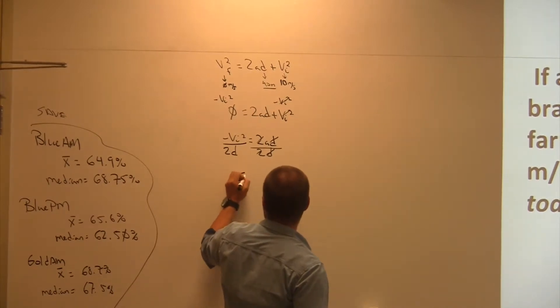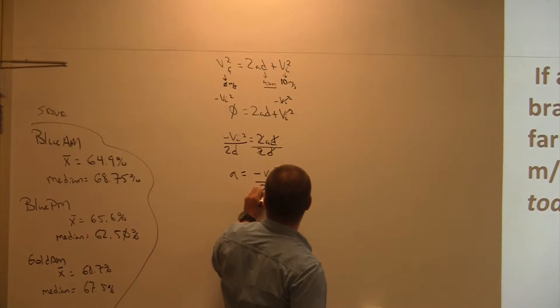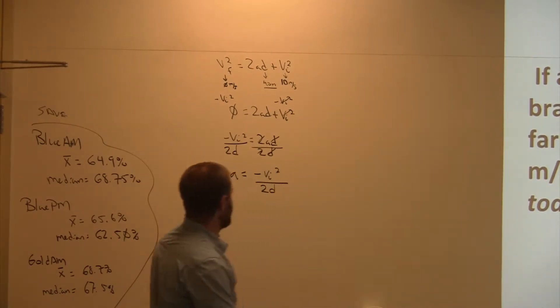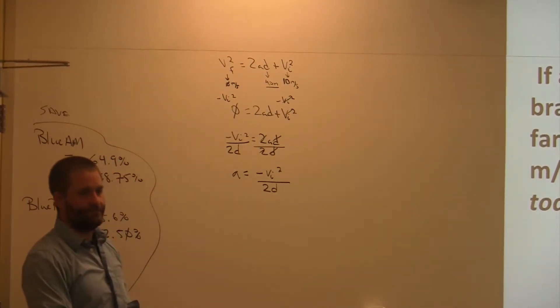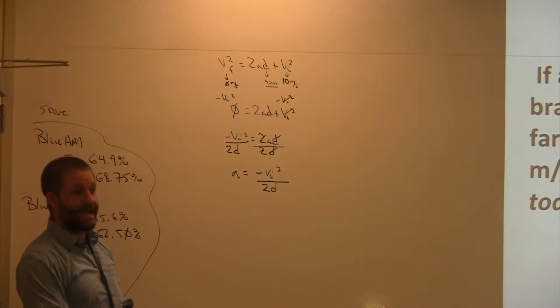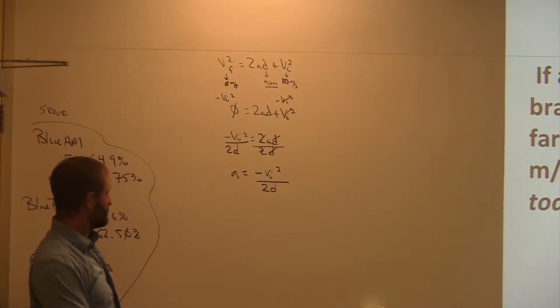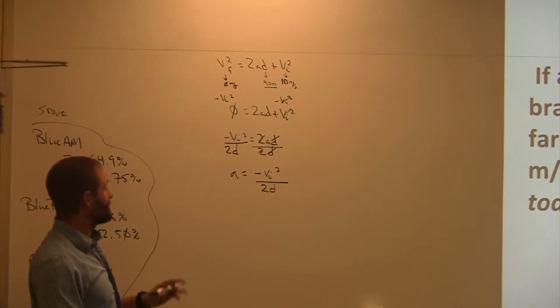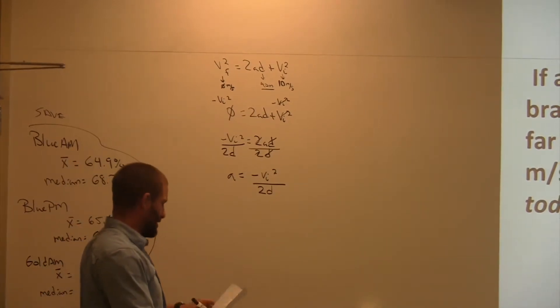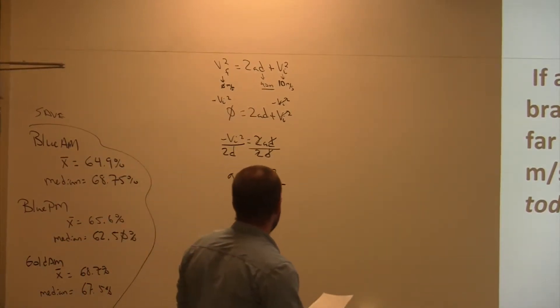Now, my A is going to equal negative V I squared all over 2D. Does it make sense that my acceleration should be negative? Yes. Because I am braking. I'm just finding acceleration here. I'm showing you a mathematical relationship.